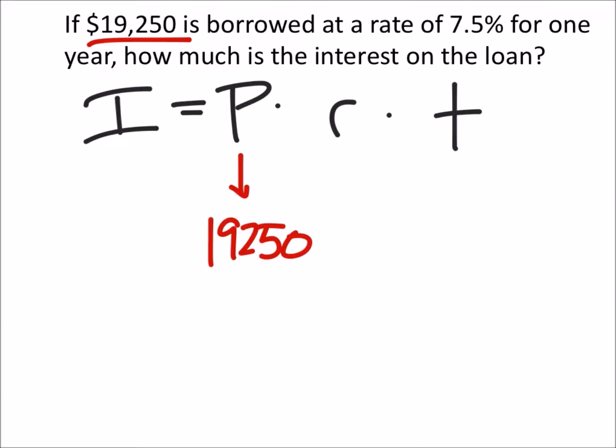What's great about this, they're only asking about the interest, so it's not like we have to add this to the principal to see how much is actually owed after the one year. The rate is 7.5%, but we need to make that a decimal, so we're going to divide that by 100 and make that 0.075.